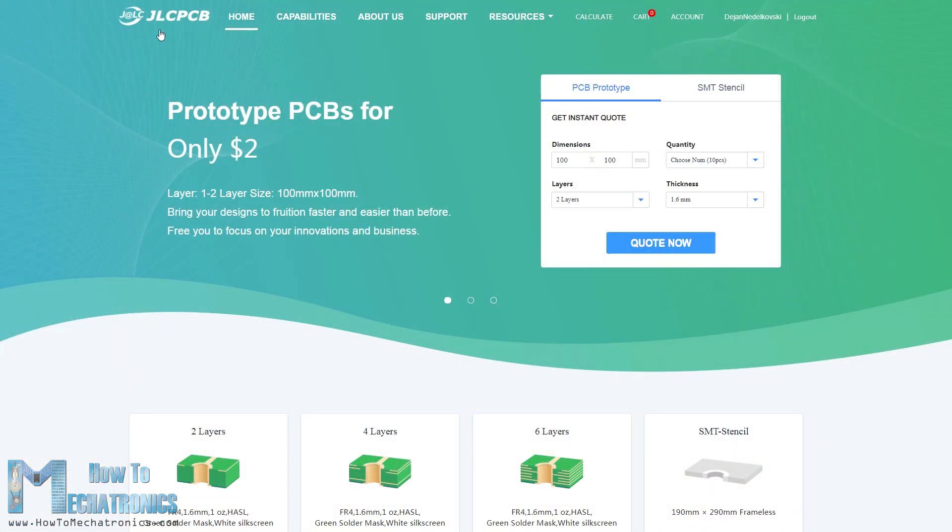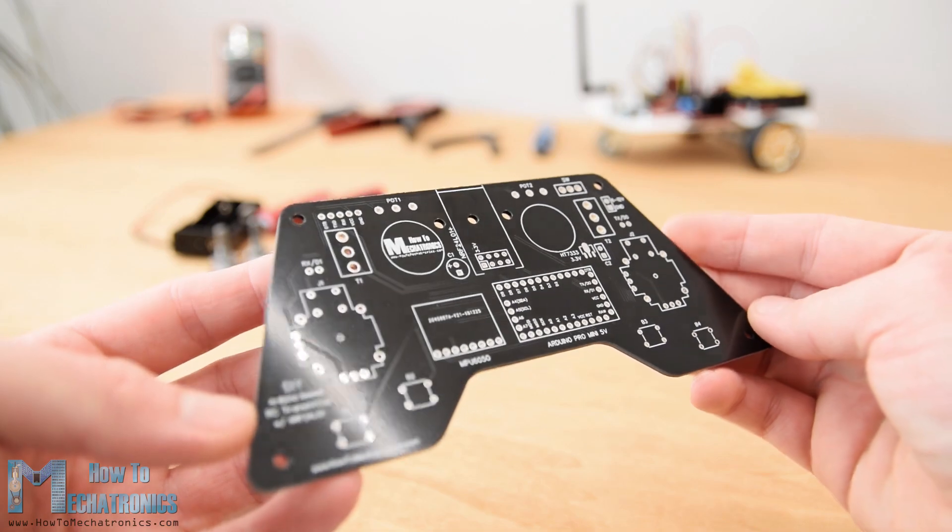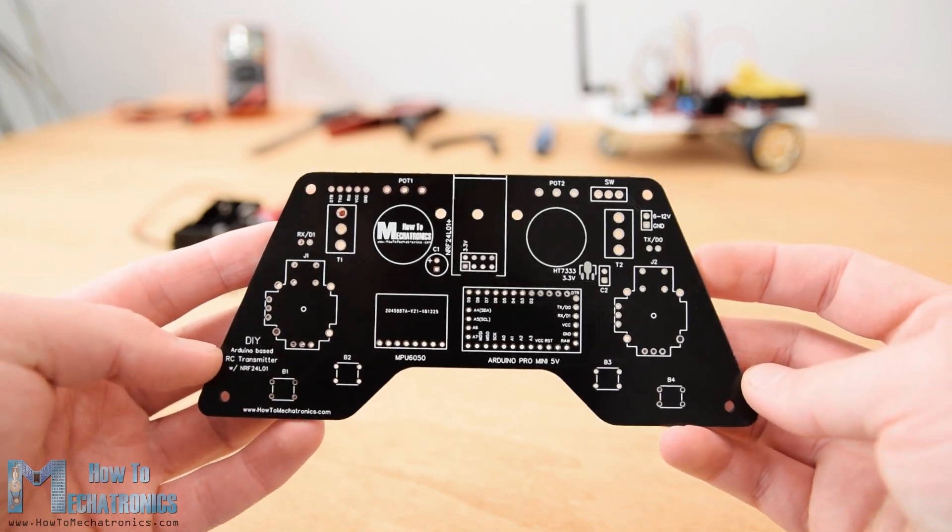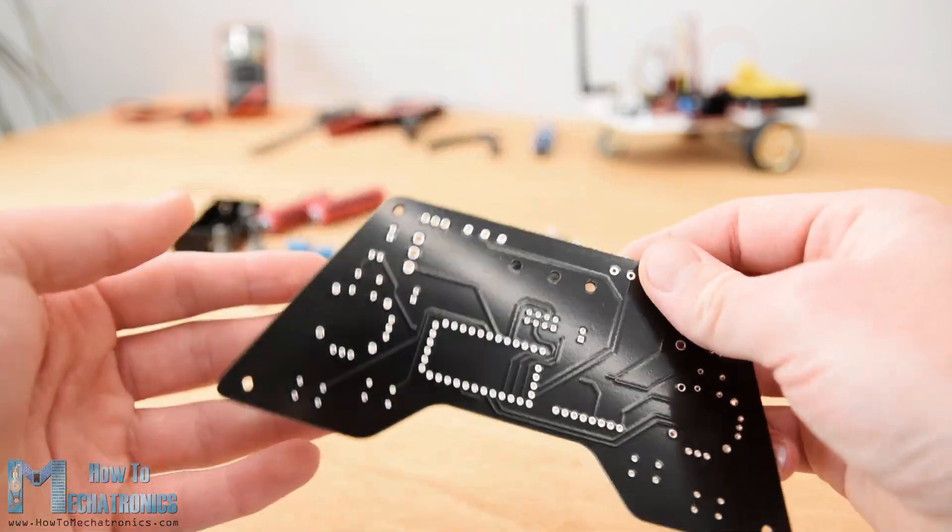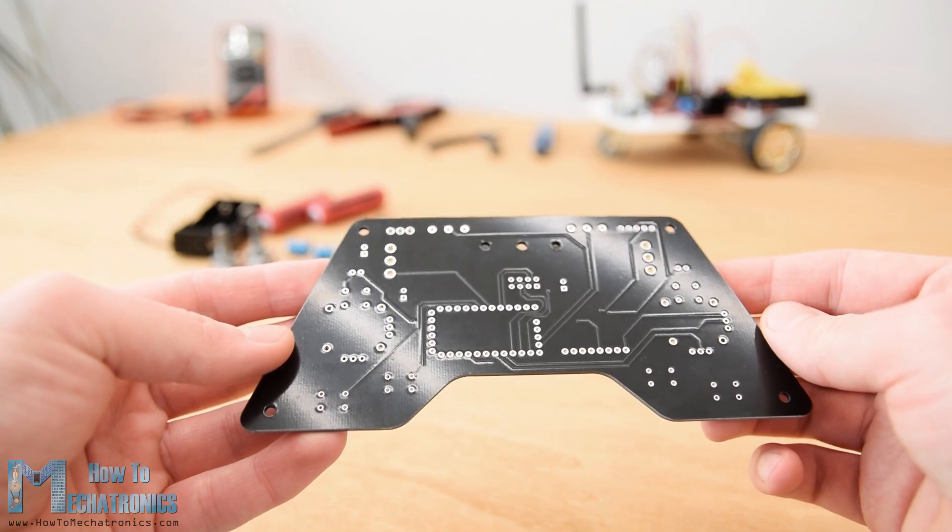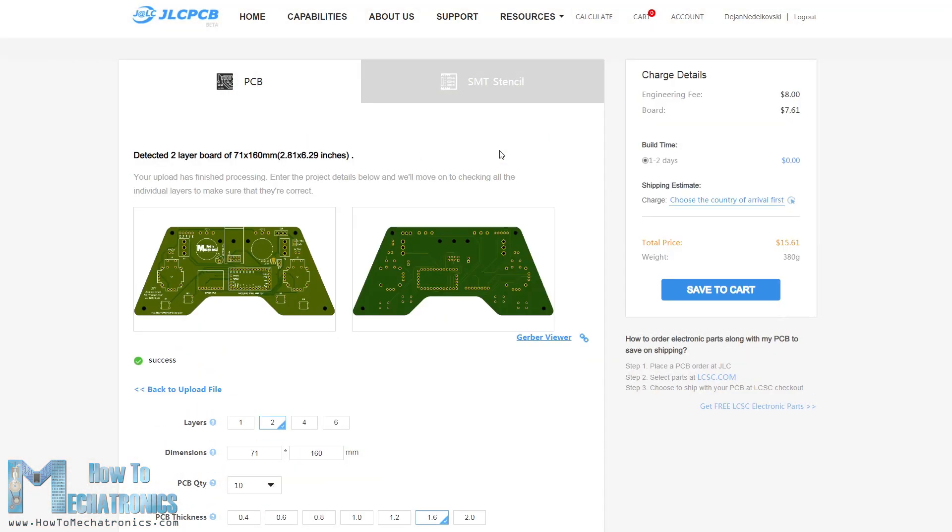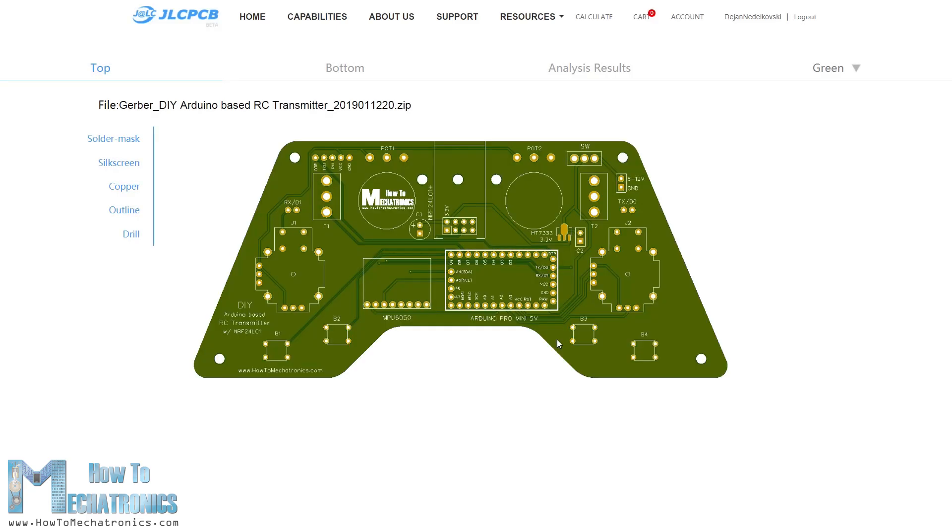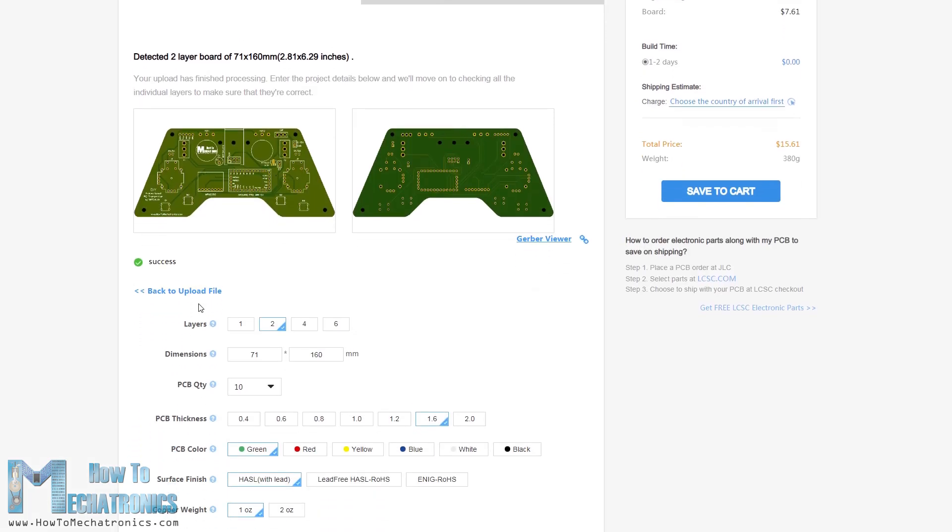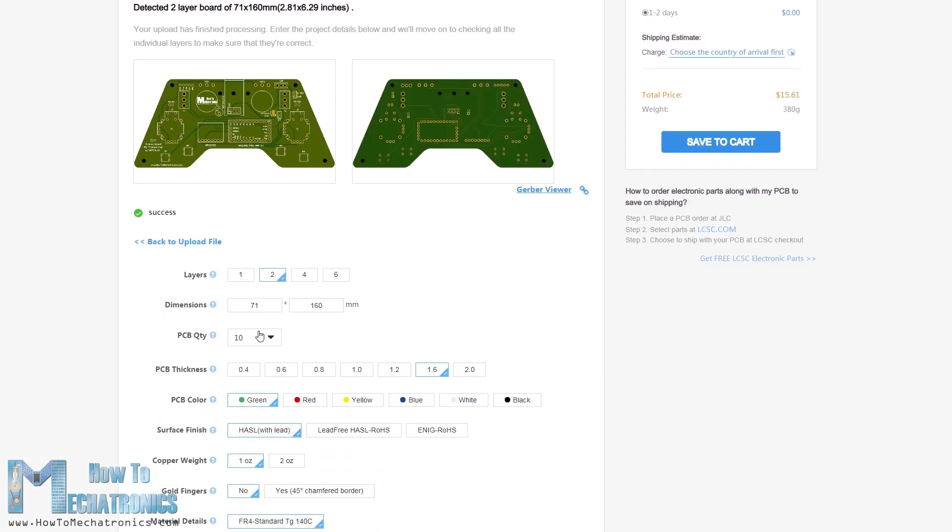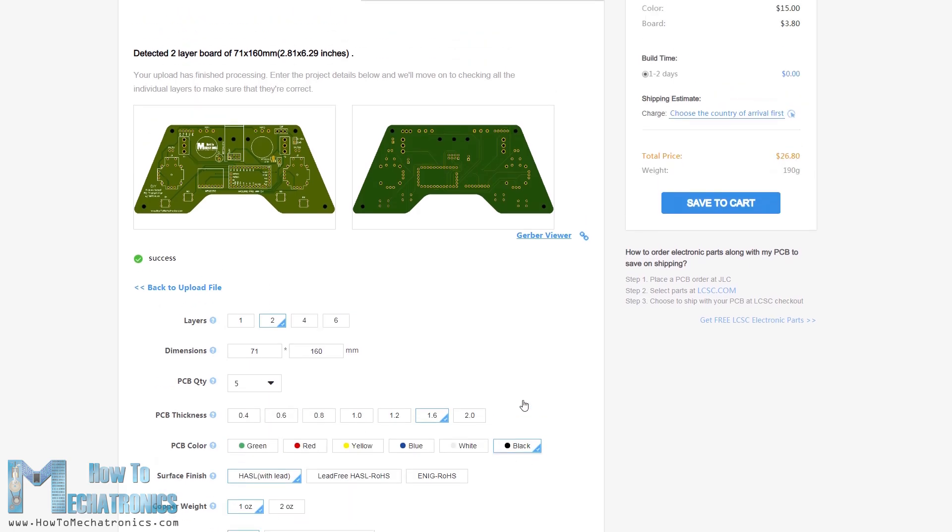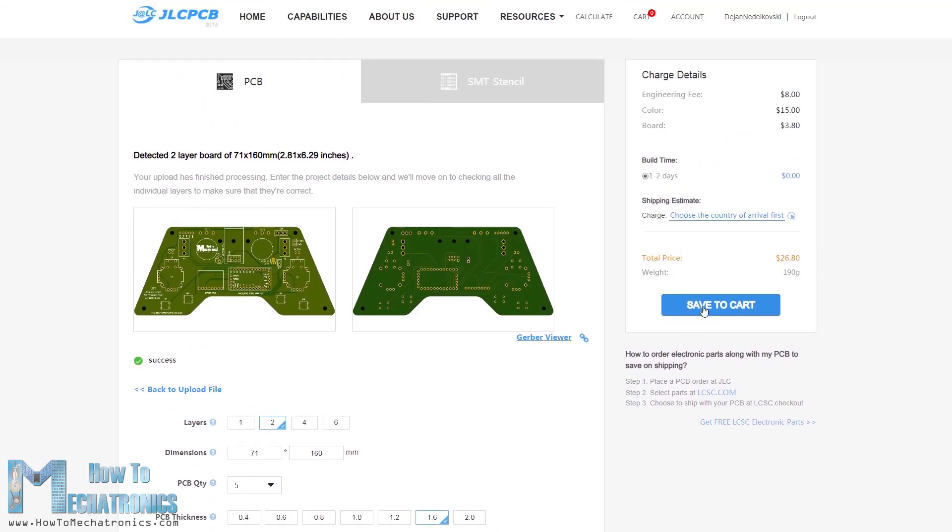This video is sponsored by JLCPCB. JLCPCB is a manufacturer of high-quality PCBs, which are used in many industries, for prototyping as well as DIY projects. Once you have your PCB design ready, simply upload the Gerber file, review your PCB in the Gerber Viewer, select the properties that you want and order your PCB at a reasonable price. If it's your first order from JLCPCB, you can get up to 10 PCBs for only $2.